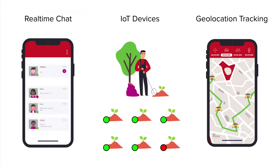In practice, this enables developers of a chat application to show currently online user information in the UI. It allows farmers with IoT devices that water their crops to account for the devices that are functioning. In mobile rideshare apps or taxi apps, riders can see how many drivers are currently on duty, all thanks to the PubNum Presence API.